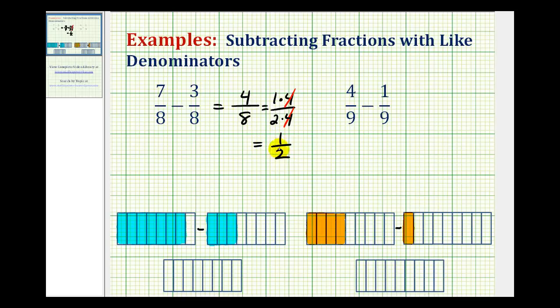Let's also take a look at the model for the subtraction problem. If we view this large rectangle as one unit, divided into eight equal parts, this would be the model for 7 eighths. This would be the model for 3 eighths. And because our denominator is the same, that means each of these pieces is the same size.